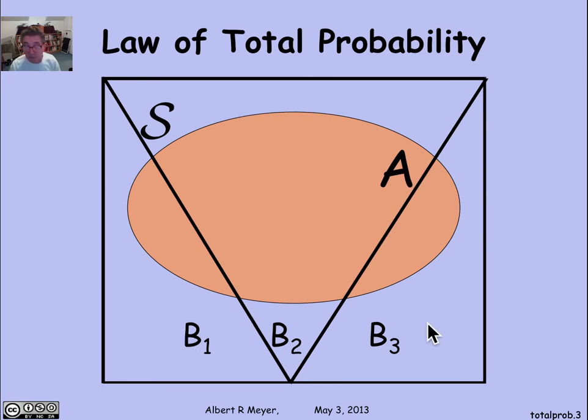So there's a picture of B₁, B₂, and B₃ cutting up the whole sample space S, represented by the square or rectangle.